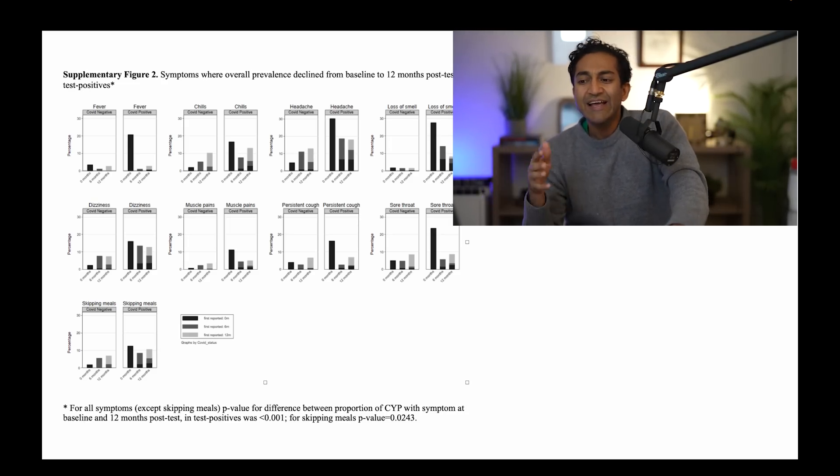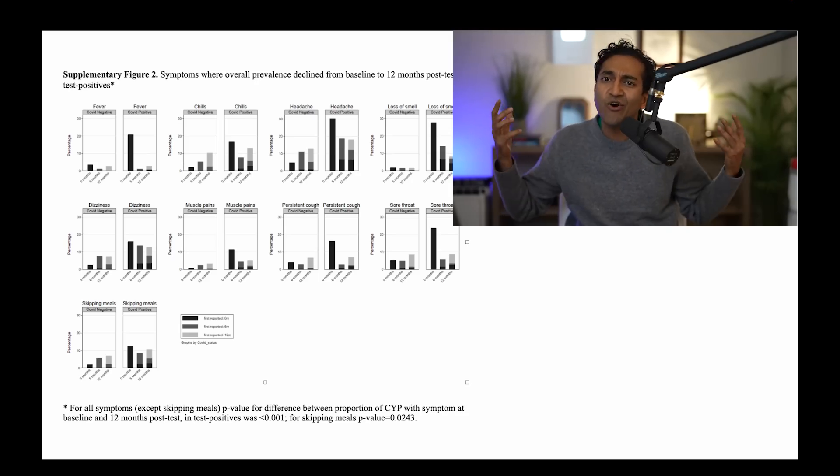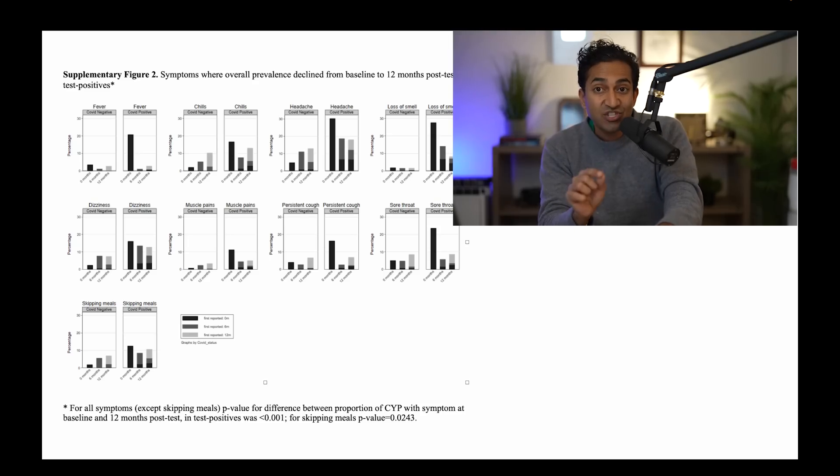Dizziness, muscle pains. These things are getting better. The people who had dizziness at baseline, that dark bar is getting smaller. There's some new people who have dizziness at month 12. They're not the same people. They don't have persistent dizziness. It's a new group of people with de novo 12-month dizziness. Is that linked to the virus? I don't know, but these authors are pointing out the deficiency of cross-sectional study design. We're going to come to that.